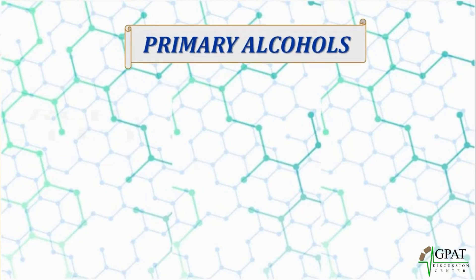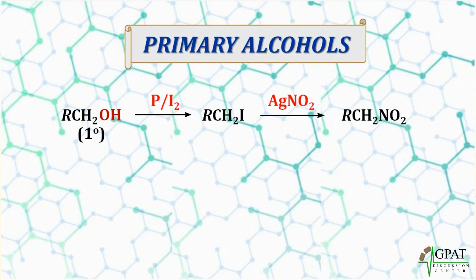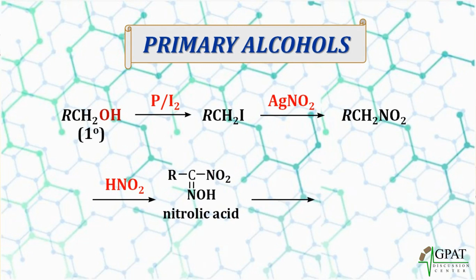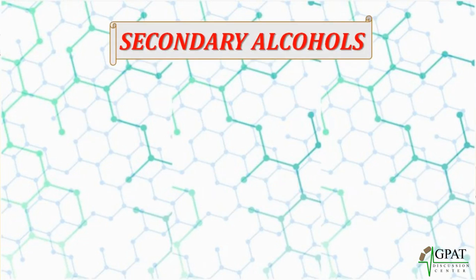For primary alcohols (R-CH₂OH): first, reaction with phosphorus and iodine forms the alkyl iodide. This alkyl iodide reacts with silver nitrite to form the nitroalkane. The nitroalkane reacts with HNO₂ to form nitrolic acid. Nitrolic acid reacts with caustic soda (NaOH) giving a blood red color. Memory trick: primary and red both start with 'R', so primary alcohols form the red color.